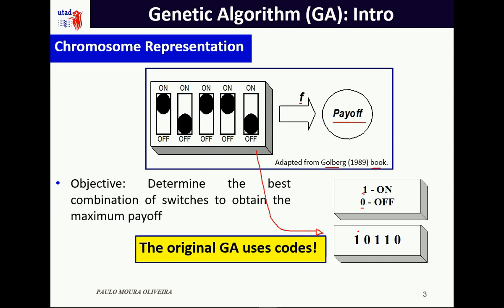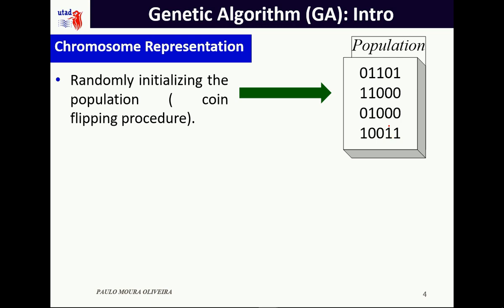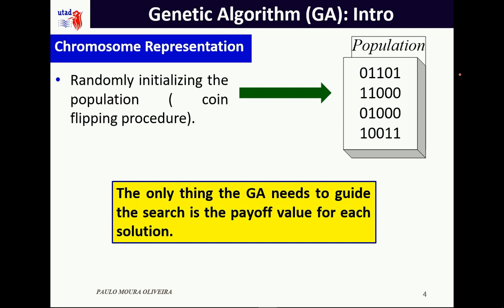The first thing we can do is randomly initialize the population. This can be done using a coin-flipping procedure — with 50% chance we generate zeros and ones to fill each of the five positions of each chromosome. We have in this case four chromosomes in the population. The only thing the GA needs to guide the search is to know the payoff value for each solution, for each candidate — that is the only thing needed to evolve the search.